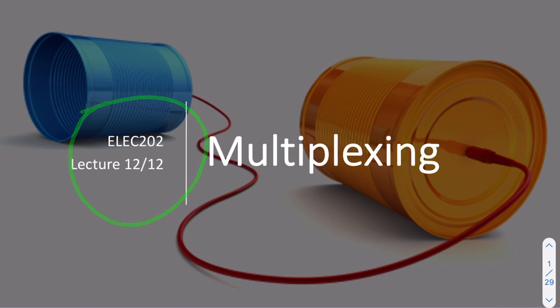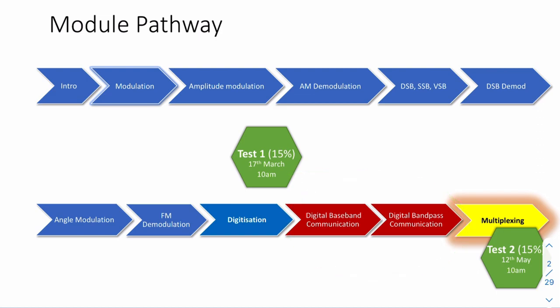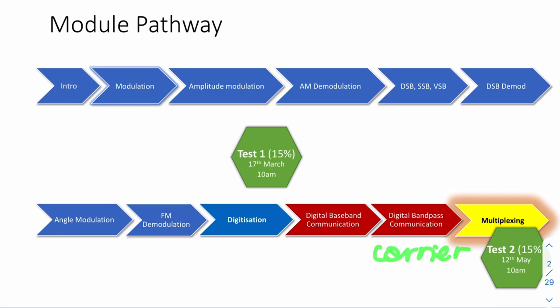Hello and welcome to lecture 12. This is our final lecture, where we'll be looking at multiplexing. In our last two lectures, we looked at digital modulation — digital baseband modulation, which was the same as pulse modulation, and digital bandpass modulation, which is carrier-based wireless communication. In our final lecture, we want to say a few words about multiplexing. This is a really short lecture — it shouldn't be more than around 20 minutes.